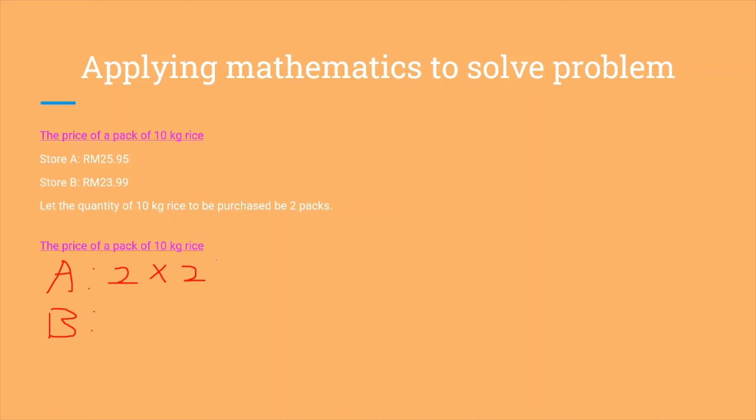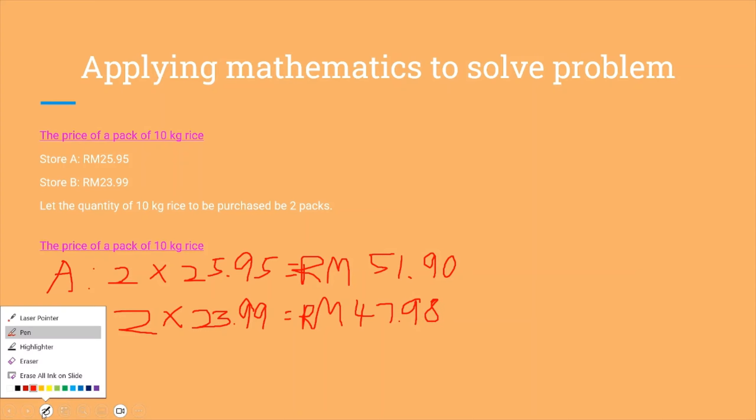We will calculate the price to be paid. So we order 2 packs of rice from each of the stores. Store A would be 25.95, so we get the value of RM51.90, and from store B we get the value of RM57.82.